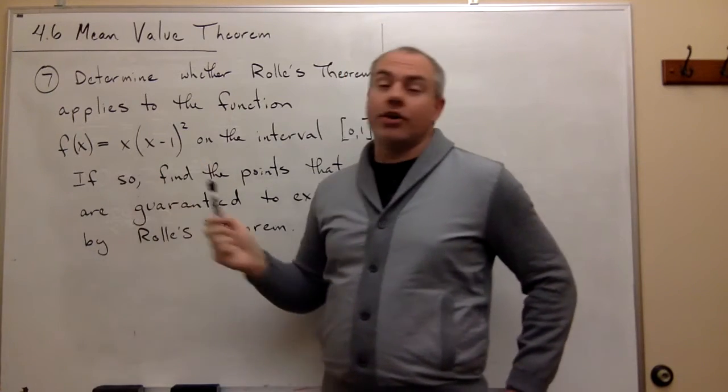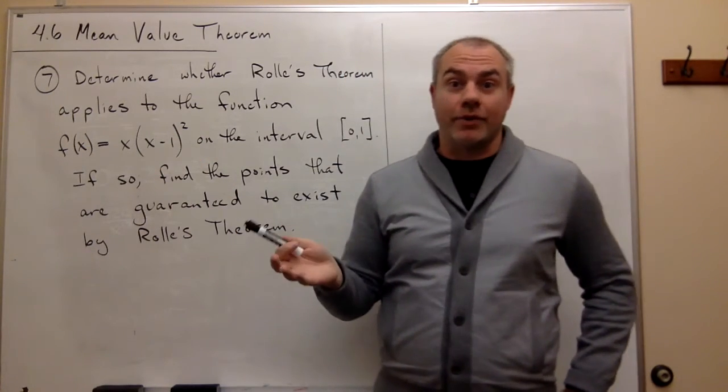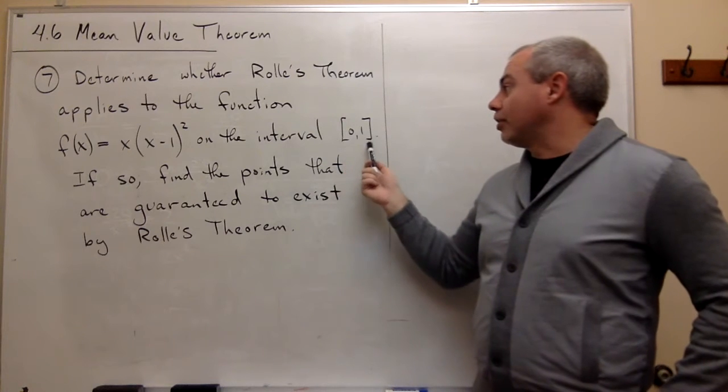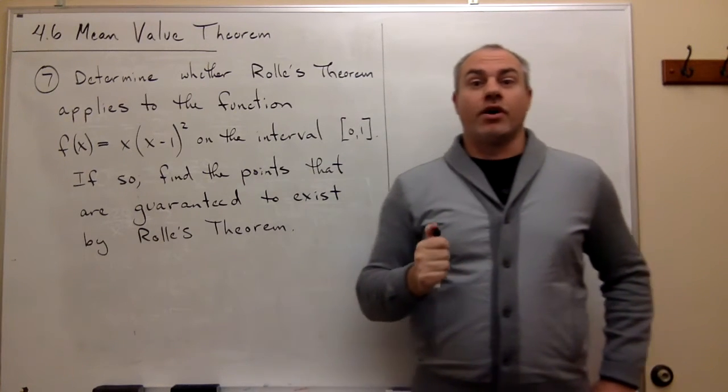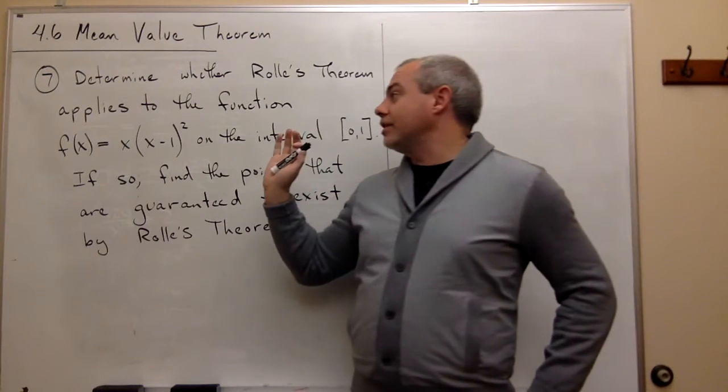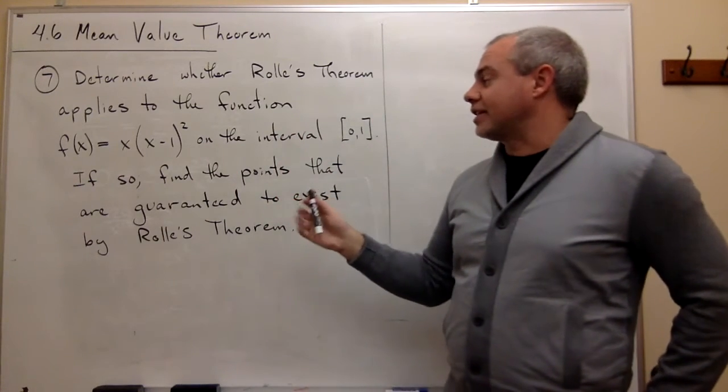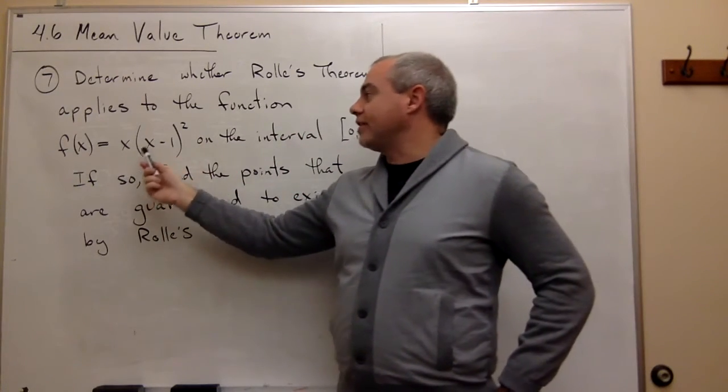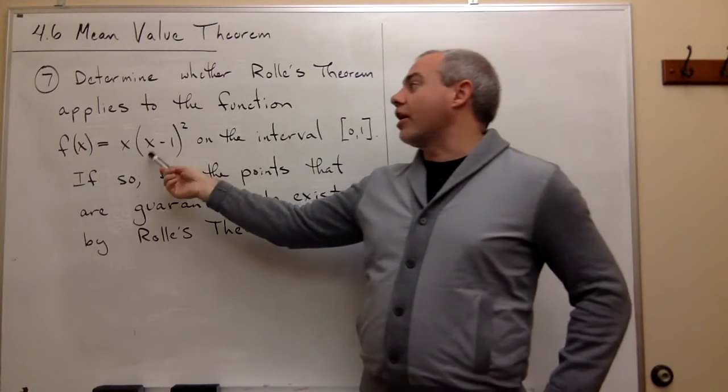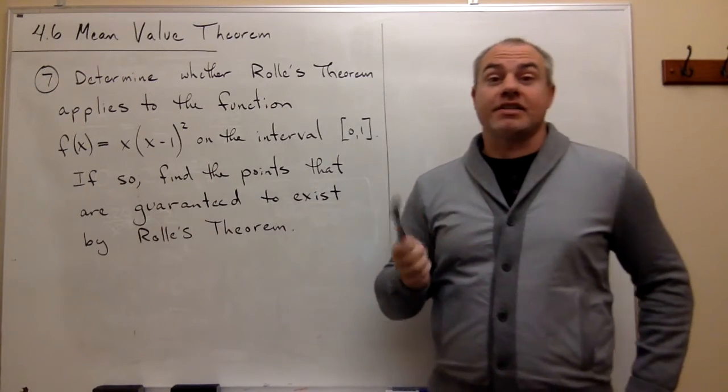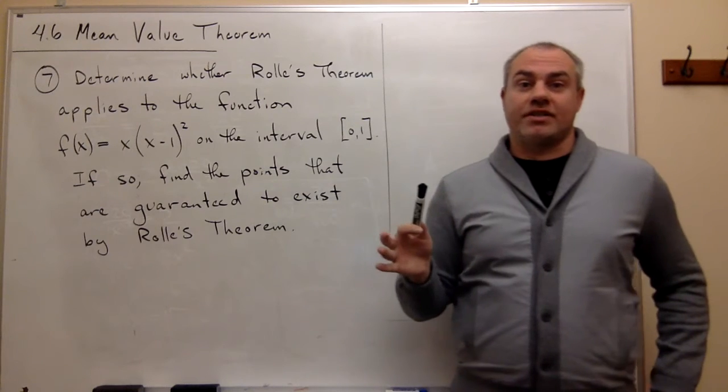It's certainly, polynomial functions are differentiable everywhere. So it's certainly differentiable on the open interval from 0 to 1. So the only thing I really need to check at this point, since it's pretty obviously continuous and it's pretty obviously differentiable, is I still need to test, are the endpoints the same?